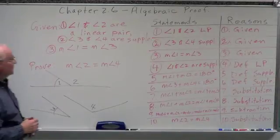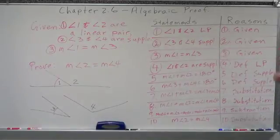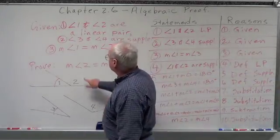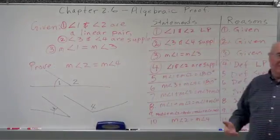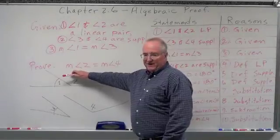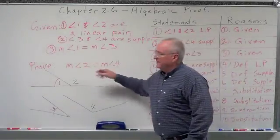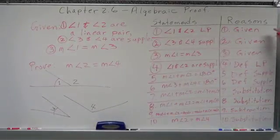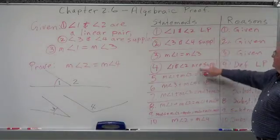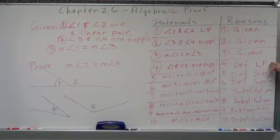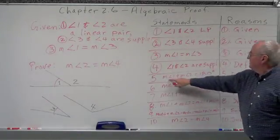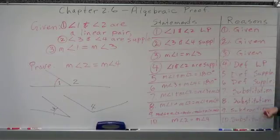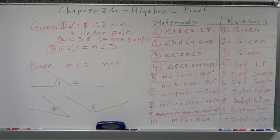What we've done is combined geometric capabilities and characteristics with our algebra and properties to come up with a proof proving that angle 2 and angle 4 have to be equal. We could also add a final step: prove angle 2 is congruent to angle 4, with reason definition of congruency. You have to know definitions — they are so important in geometry. If you don't know the definitions, you don't know how to prove things. You have to know the exact definitions.